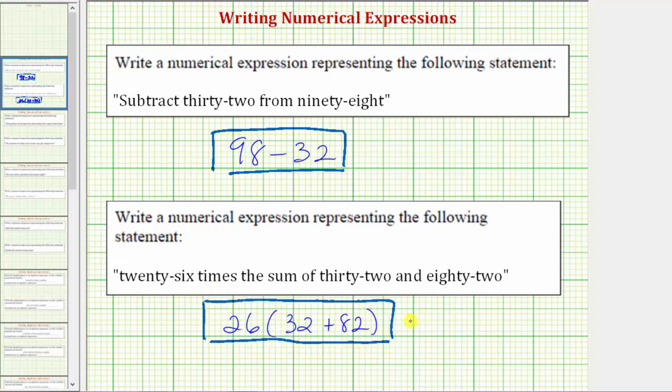We can write several equivalent expressions that if we were to evaluate them would give us the same value. First, because multiplication is commutative, meaning the order of multiplication does not change the product, we could also write this as the sum of 32 and 82 times 26. This is not exactly what the statement is saying but this expression is equivalent because of the commutative property of multiplication.